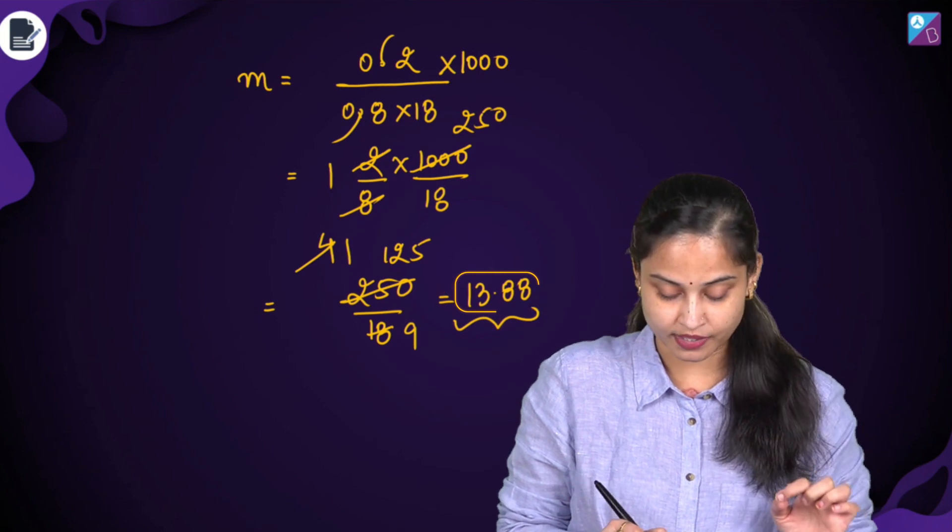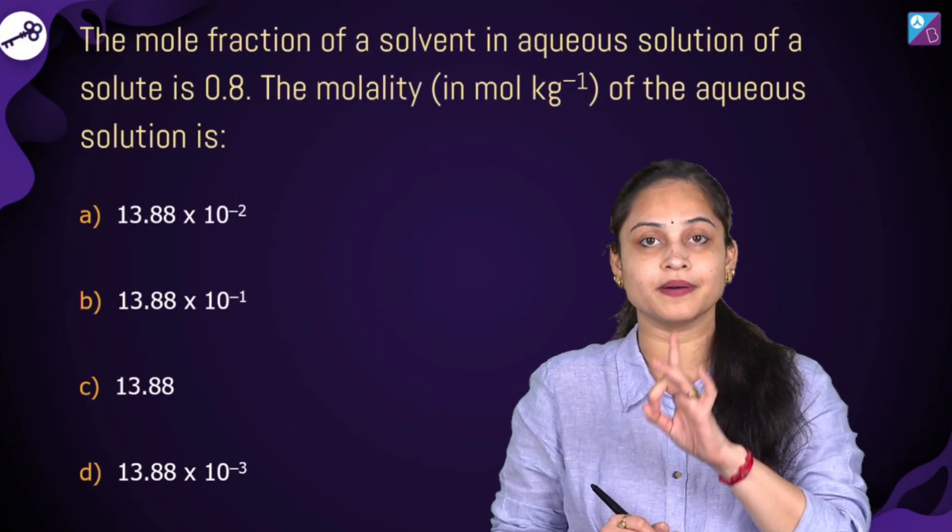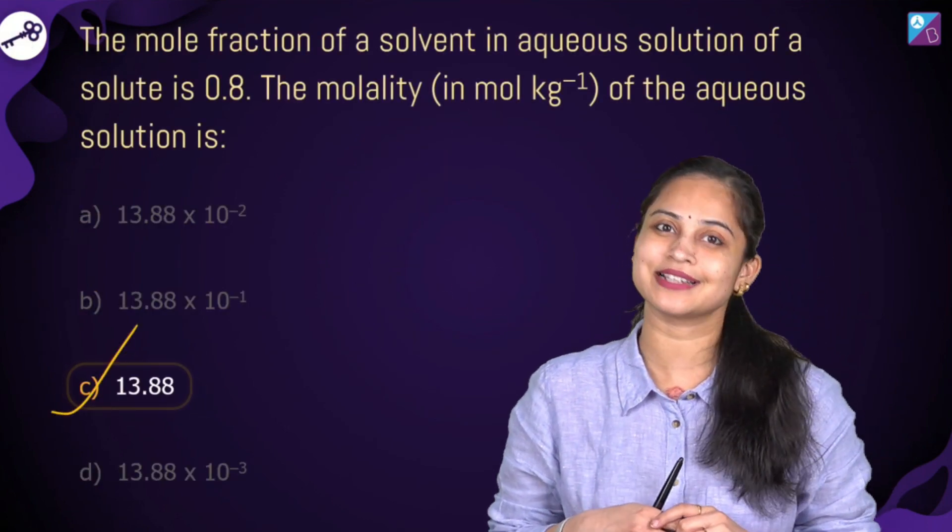So molality is 13.88 in moles per kg. Option number C is the right answer.